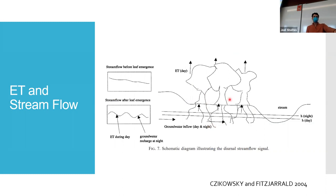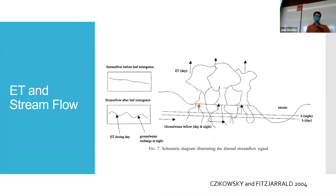Streamflow can actually be affected by evapotranspiration. When you have base flow conditions later in summer and a big riparian forest, the stream is fed by groundwater. The trees intercept that groundwater and evapotranspire it. You can see this signal every day — when the sun is out, the trees suck a bunch of water out of the ground, the stream level goes down, and at nighttime it comes back up. The stream level will be higher at night and lower during the day.